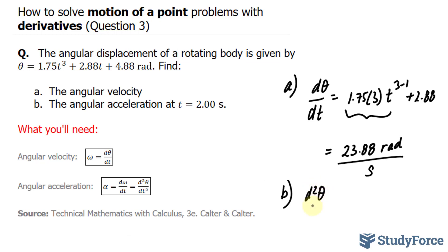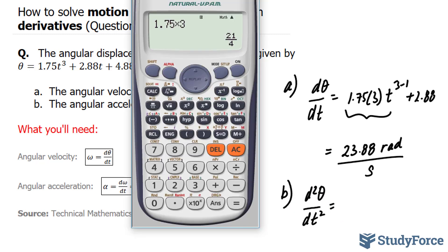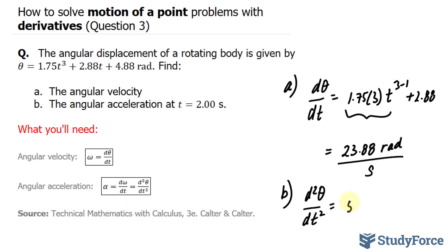So d²θ/dt² is equal to—and this bottom part is squared—that number was 5.25 times 2, because remember this has become t², and t² minus 1 is 1. So that's the exponent of 1. The derivative of 2.88 is 0.